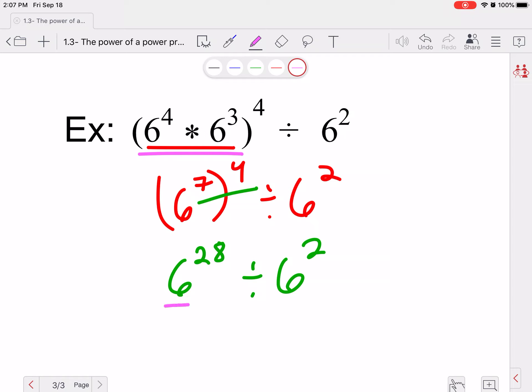So again, when I have the same base and I'm dividing, I can subtract my exponents. So I'm going to have the same base of six and 28 minus two is 26. So we'd have six to the 26.